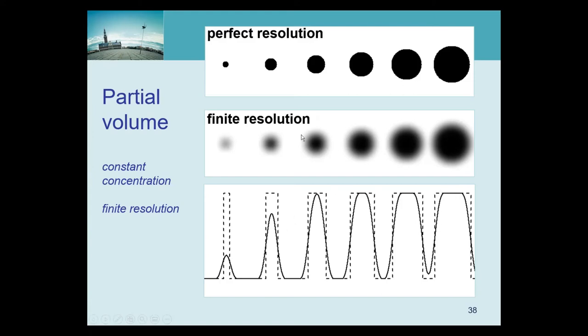Another way to say the same thing, a small object consists mostly of edge, and edges are affected by this blurring. Big objects consist mostly of uniform objects, and they are not affected.